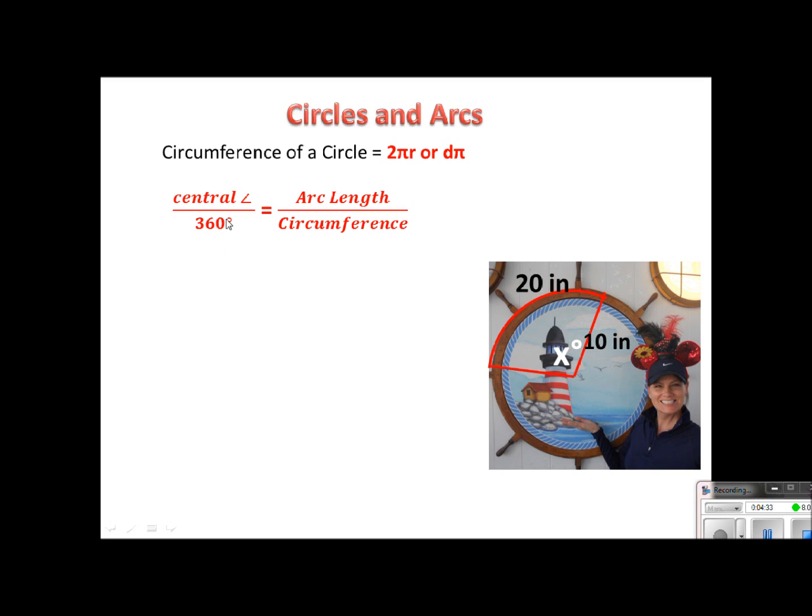Well, again, we have the exact same proportion here, but this time I don't know the central angle. I'm given the arc length, so I am just going to fill in what I've been given. Well, I don't know the central angle. That's what I'm trying to solve for this time, and it's over 360.